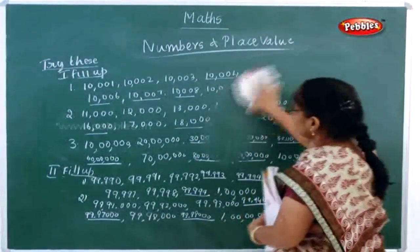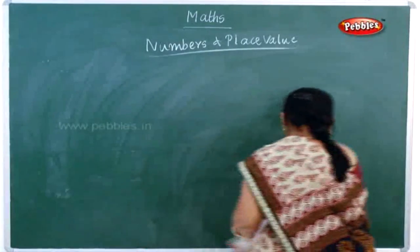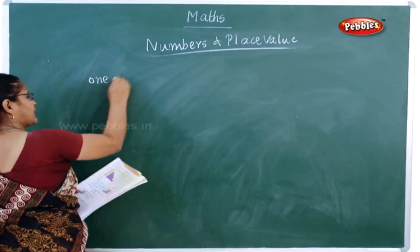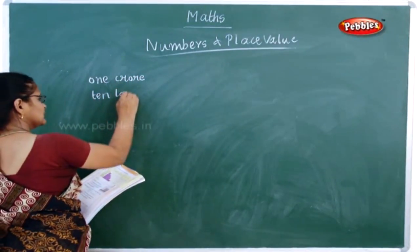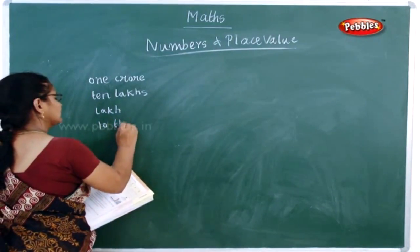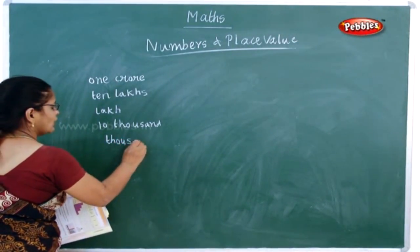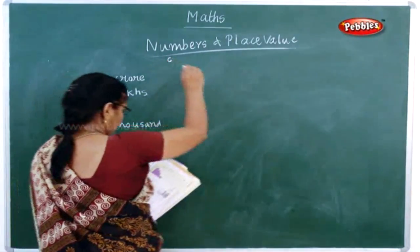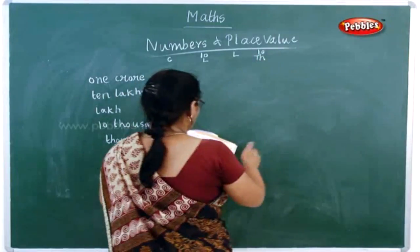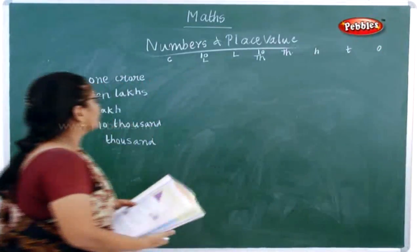Now next one — they have given: fill in the correct numbers. I will make a very easy table for you. In one crore, then ten lakhs, then one thousand. The table they have asked: crore, ten lakh, lakh, ten thousand, one thousand, one hundred, tens, ones — this is the order you write it.